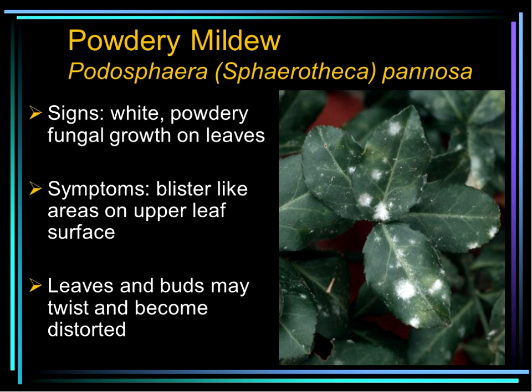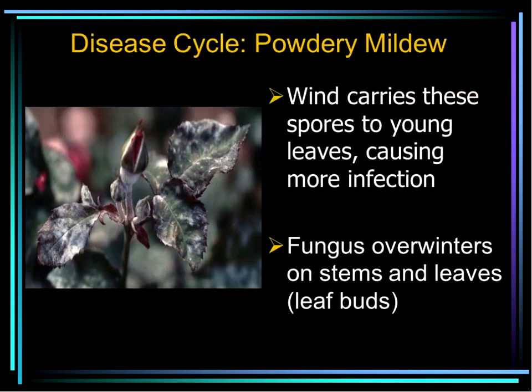With powdery mildew, leaves may be distorted, with blister-like areas on the upper surface, and the buds can also distort and twist. The fungus overwinters on stems and leaves. Spores require extremely high humidity to germinate, but free moisture will inhibit germination. You might think leaving the leaves wet would help with powdery mildew, but it will make some other diseases very, very difficult to control.